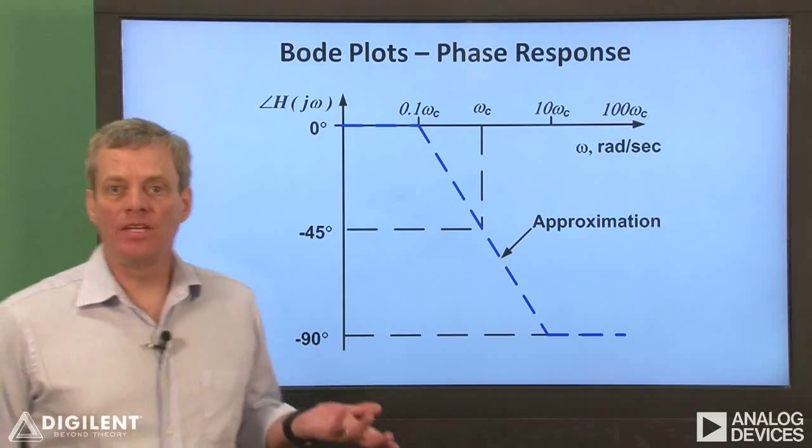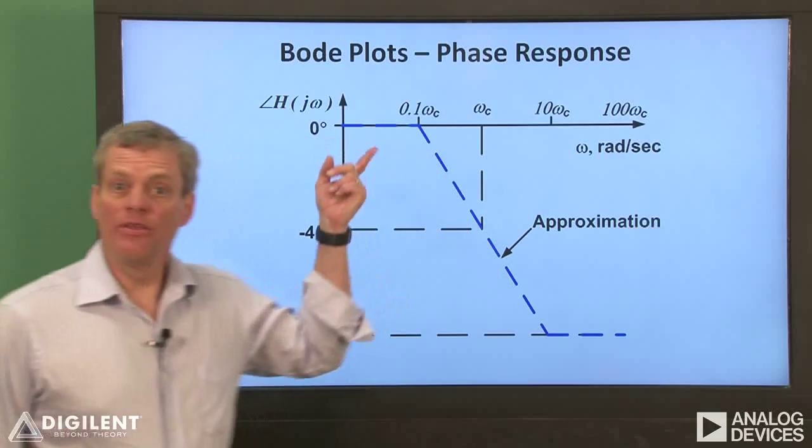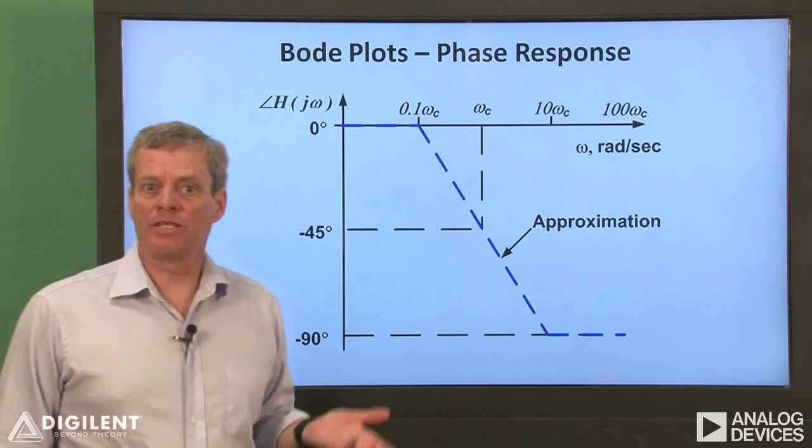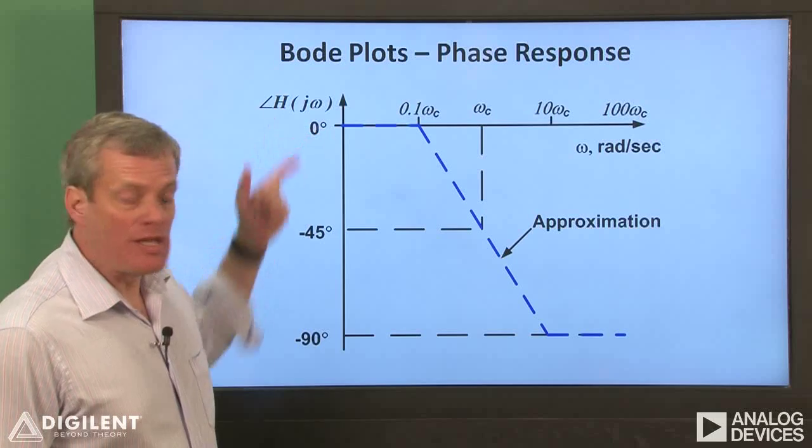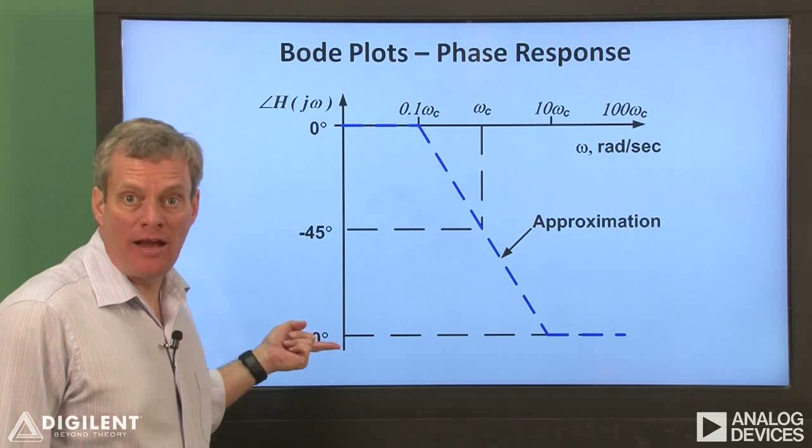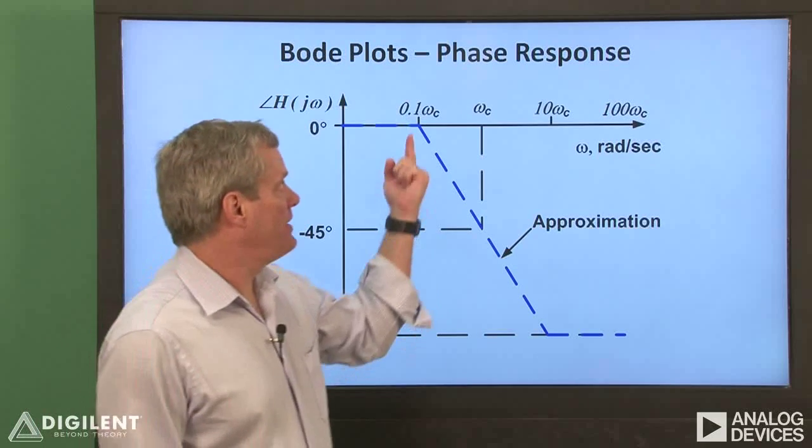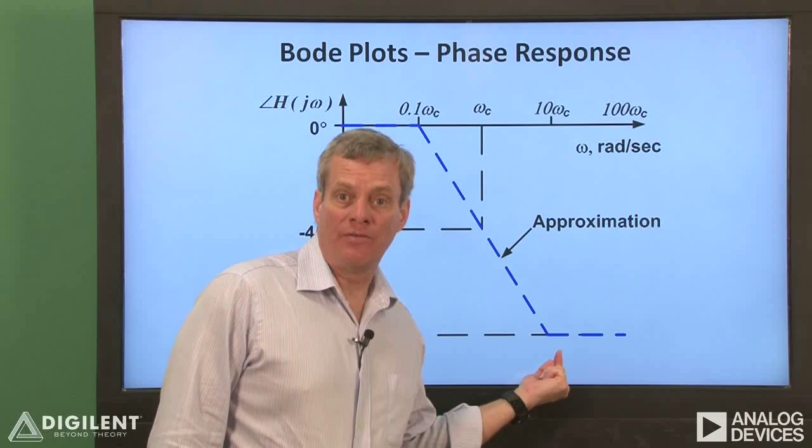Like the magnitude response, the phase response of a Bode plot has a logarithmic frequency scale. The phase axis, however, is linear. The straight-line approximation to the phase response of a first-order low-pass filter is zero at low frequencies and minus 90 degrees at high frequencies. The phase rolls off linearly, starting at a decade below the cutoff frequency and ending at a decade above the cutoff frequency.